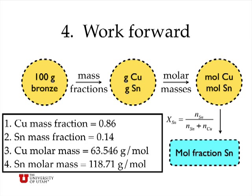So when I work forward, I can recognize that it really doesn't matter what the initial mass of bronze is. I can start with any mass that I want, because it's only the relative masses of copper and tin that are really going to count in this problem. So now, if I assume that I have 100 grams of bronze, then I could calculate the number of grams of copper and the number of grams of tin in this sample.